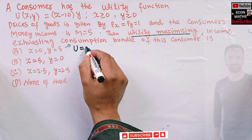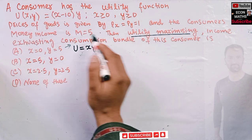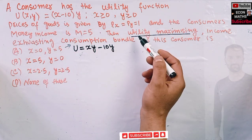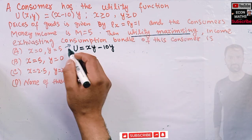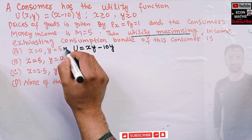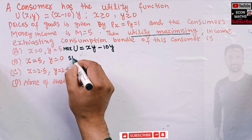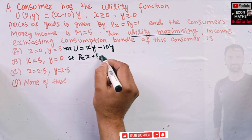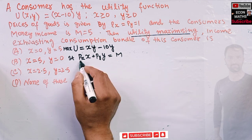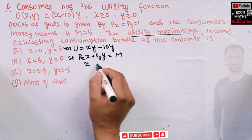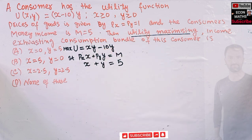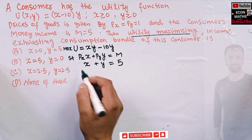Expanding the utility function gives us U = xy minus 10y. We want to maximize this utility subject to the budget constraint: price of x times units of x plus price of y times units of y equals income. With price of x equal to one and price of y equal to one, the budget constraint simplifies to x plus y equals five.